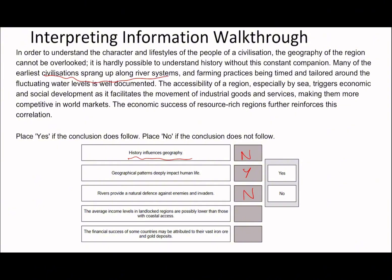Remember, we're only allowed to make inferences if something to that level is mentioned. For example, if it said rivers were used as protective measures against invading forces, then you could conclude that — but it never says anything like that in the passage. You can only have that leeway if something relevant is present. Statement four: 'The average income levels in landlocked regions are probably lower than those with coastal access.' Well, it says the accessibility of a region triggers economic and social development. Landlocked regions don't have sea access — surrounded by land — so they'll probably have lower economic development and lower average income levels. So yes, this is a relevant inference we can make.